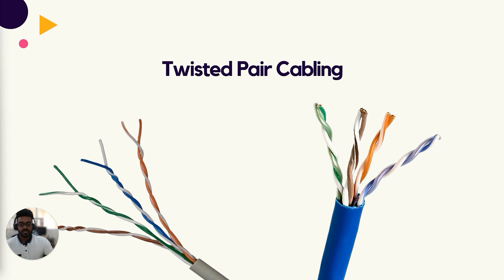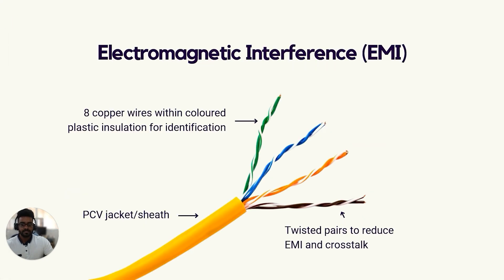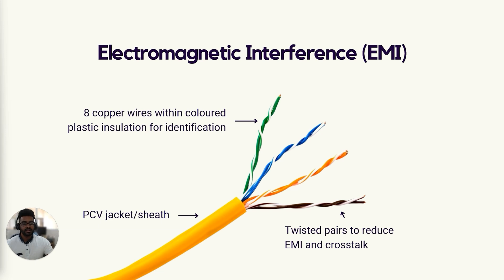The wires in twisted pair cabling are twisted into pairs for a specific reason. When an electrical current passes through any copper wire, an electromagnetic field is created around the wire — this is called electromagnetic interference, or EMI. EMI emitted by the wires in a twisted pair cable can be absorbed by neighboring wires, resulting in a shadow signal that affects communication. This effect is known as crosstalk.